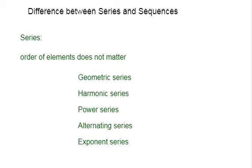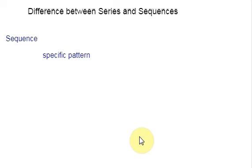Now, let us see what is Sequence. The Sequence is defined as the list of numbers which are arranged in a specific pattern. Here, order of the element matters. In Series, order of the element does not matter. This is the main important difference between Series and Sequence.